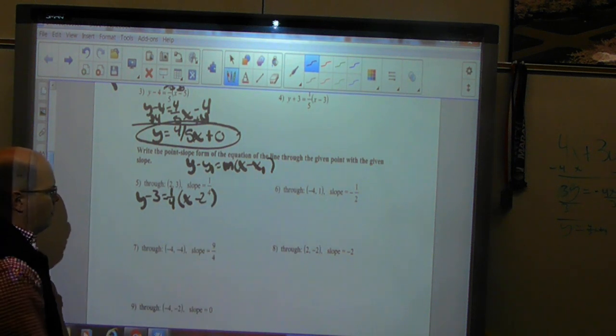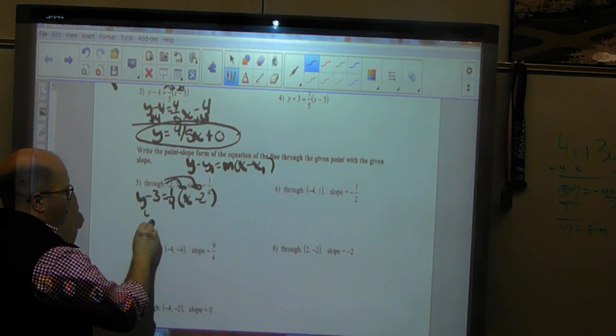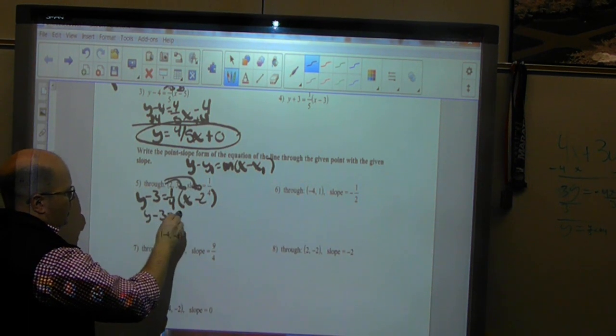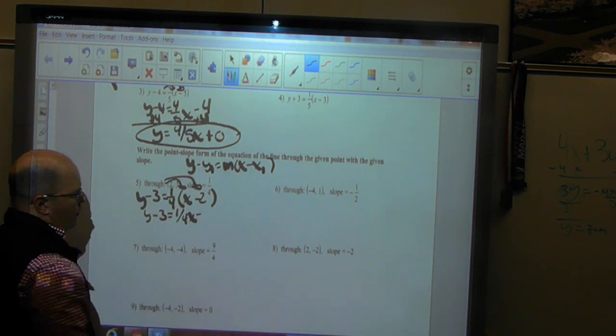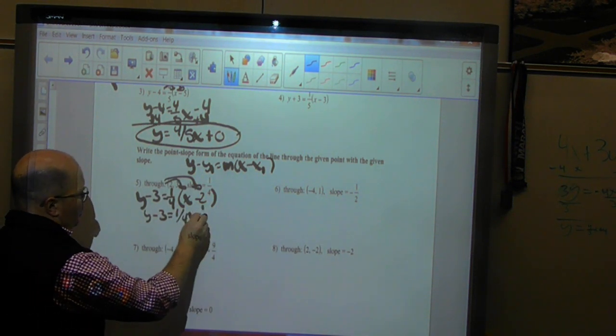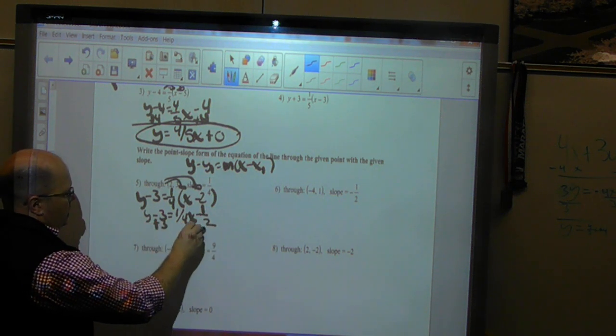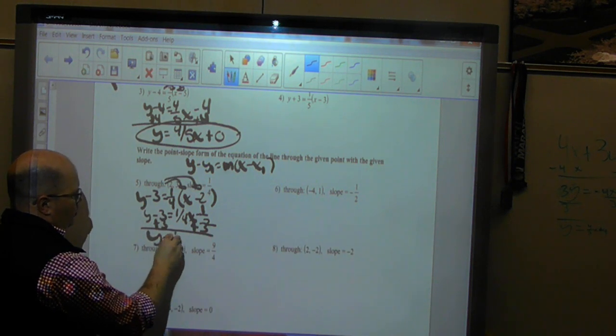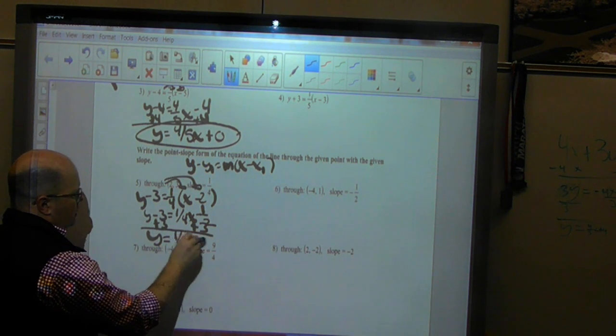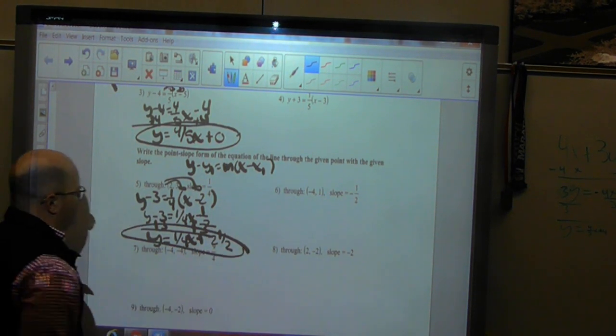I'm just going to do the same thing. Now I'm going to distribute. I'm left with y minus 3 is equal to 1 over 4x minus 1 fourth times negative 2 is 1 half. I'm going to add 3 to both sides to isolate my y, and I'm left with y is equal to 1 over 4x plus 2 and a half. And I am done.